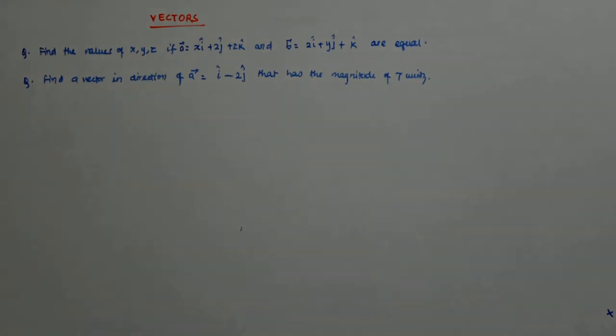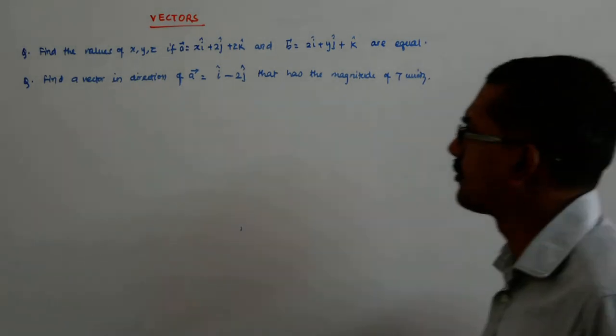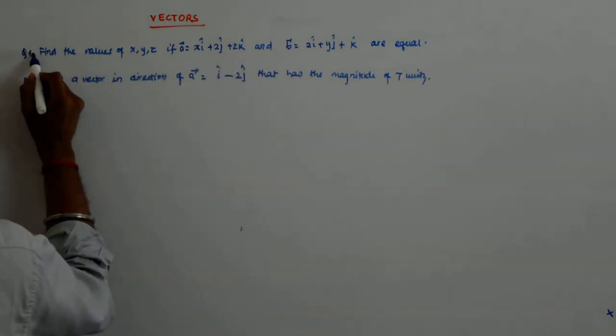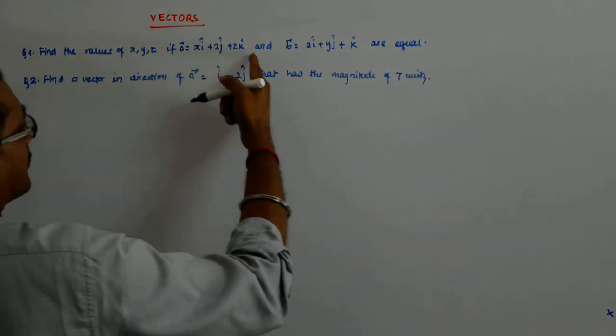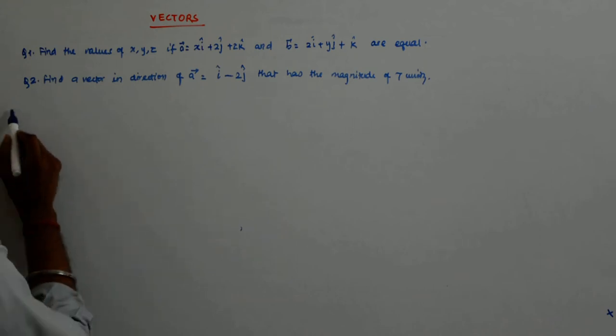So let us do some questions. They are asking you what are the values of A and B. So this is question 1 and question 2. What are the values of X, Y and Z such that A and B are equal?